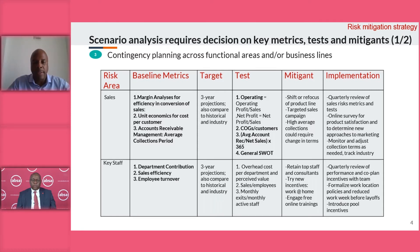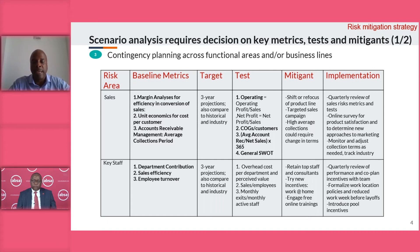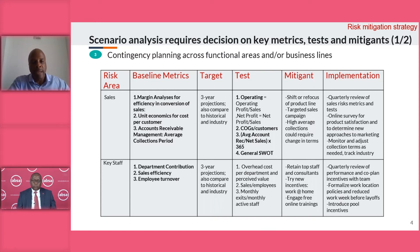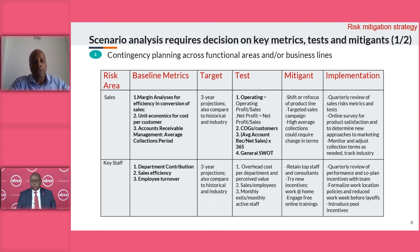Moving to key staff — most managers have had to deal with this at this time, making decisions about staff reductions, doubling down by giving existing staff more responsibility, or paid layoffs. One way to approach this is to look at the overhead cost per department and the perceived value or contribution of that department, how efficient they are in terms of revenue per employee, and the monthly exits over monthly active staff — the turnover rate. High turnover makes a functional group risky, and the rest of the metrics are largely self-explanatory.